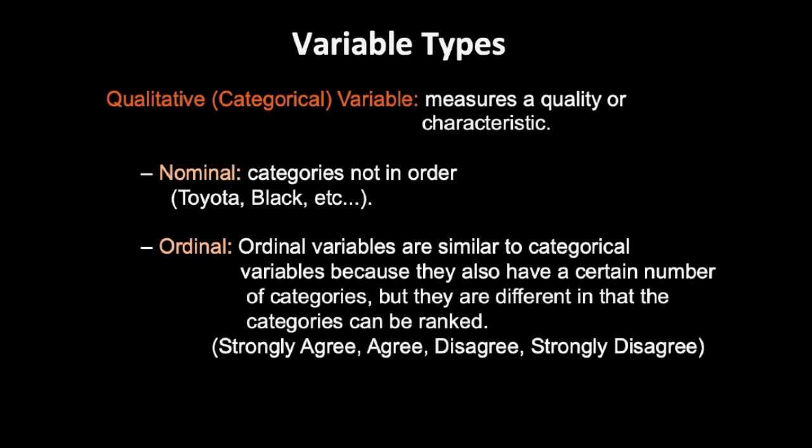Qualitative variables measure a quality or characteristic. There are two groups: nominal and ordinal. Nominal categories are not in any order — like Toyota, black, blue, red, rabbit, and so on. Ordinal variables are similar to categorical variables because they also have a certain number of categories, but they differ in that the categories can be ranked — there is an order. Examples include: strongly agree, agree, disagree, strongly disagree; pass and fail; and first, second, third, and so on.